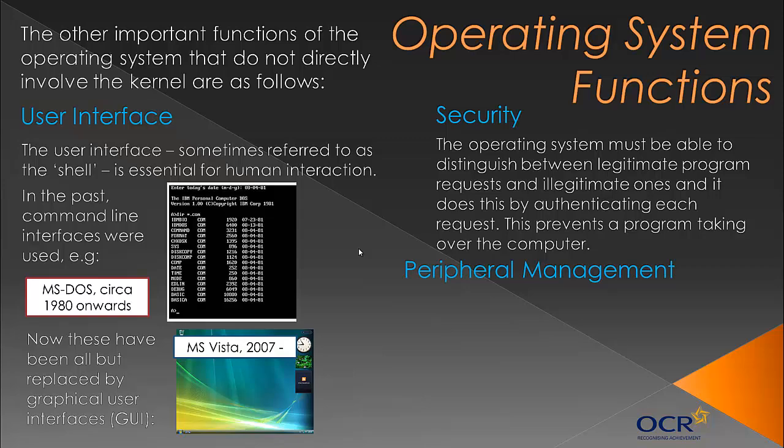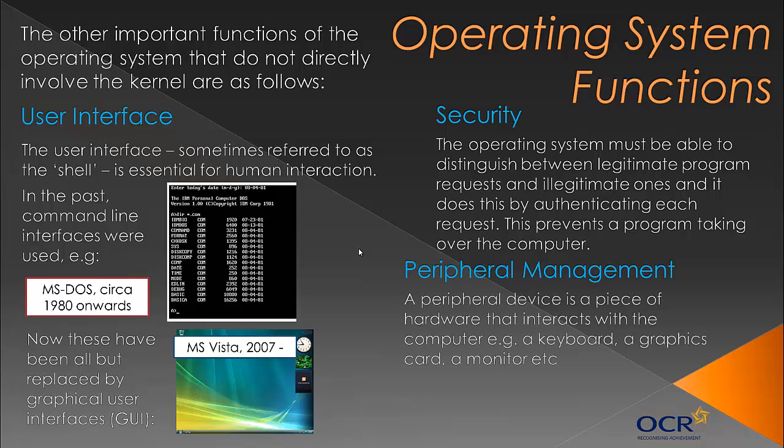The last OS function to know about is peripheral management. A peripheral device is a piece of hardware that interacts with the computer — examples include a keyboard, graphics card, and monitor. The operating system's job is to make sure they all work, managing all these peripheral devices using what are known as drivers. Often when you install a mouse, a balloon pops up saying drivers are being installed. The OS ensures they're up to date and that everything works together using drivers and other relevant software.